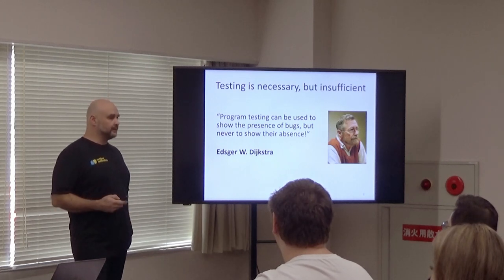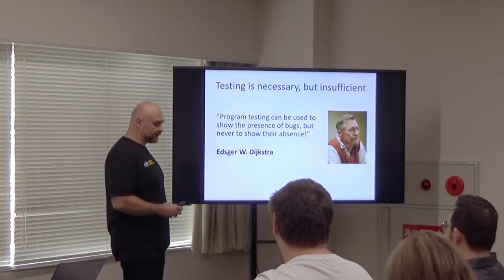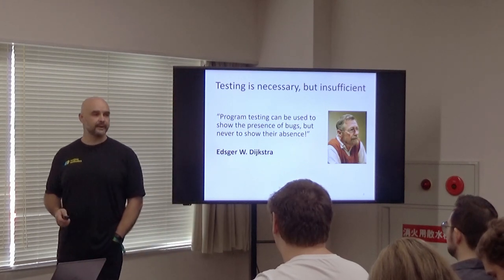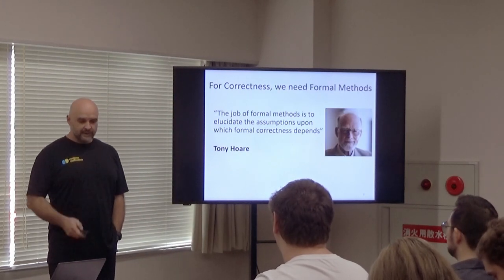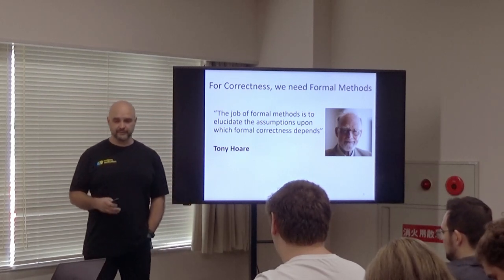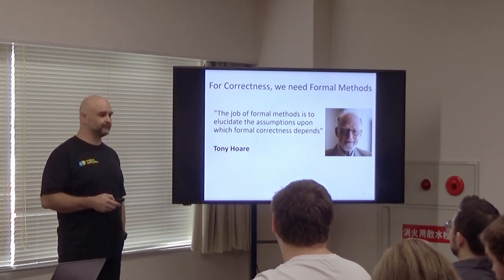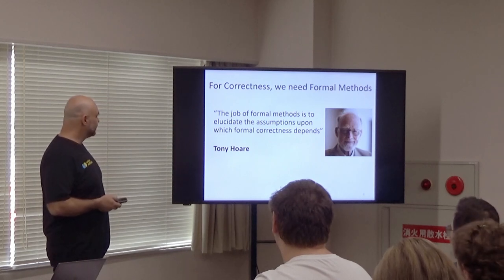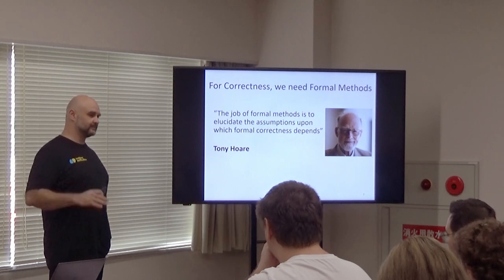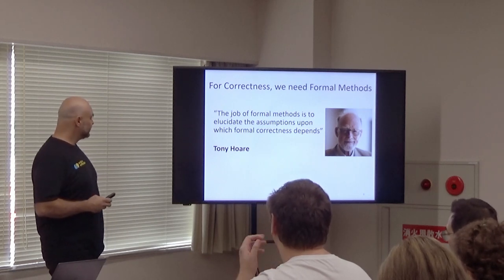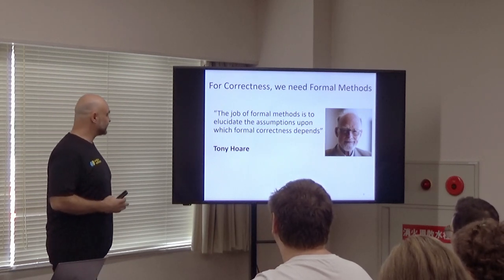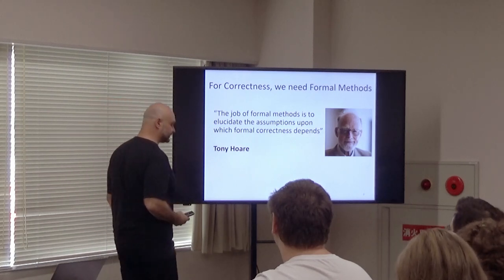To prove correctness, we need formal methods, which are mathematically grounded techniques to model and reason about systems. Another quote by Tony Hoare — both Hoare and Dijkstra have received the Turing Award, the best award in computer science — says that the job of formal methods is to elucidate the assumptions upon which formal correctness depends.